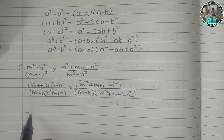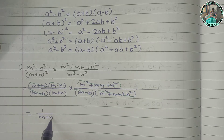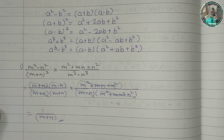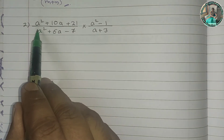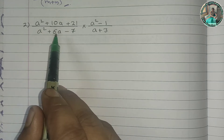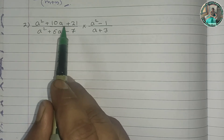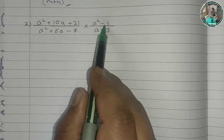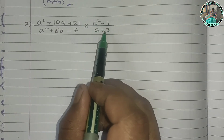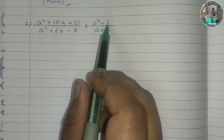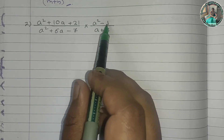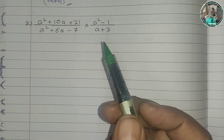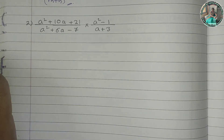The second question is: (a² + 10a + 21) upon (a² + 6a − 7). This is trinomial factorization from 6.1. There is also a² − 1 upon (a + 3). A² − 1 is of the form a² − b² formula. We check how many terms there are.